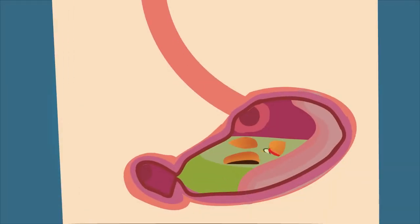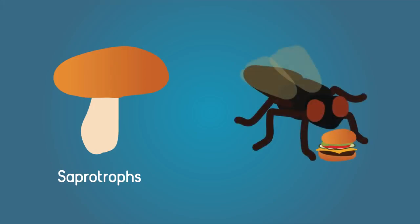Humans carry out internal digestion, as the food is digested inside our bodies. However, other organisms digest food outside their bodies. Fungi, for example, are called saprotrophs. This means they secrete enzymes out of their cells onto food around them and then absorb the nutrients once they have been broken down. House flies do a similar process where they secrete a solvent onto the food and then suck up the nutrients.